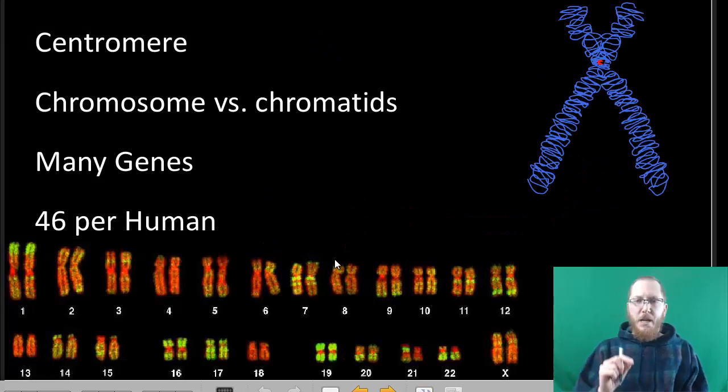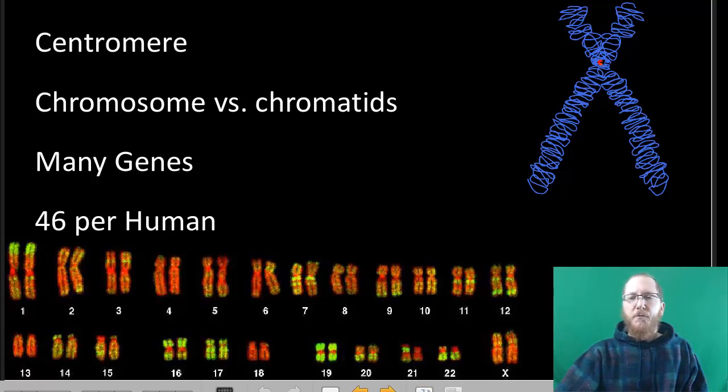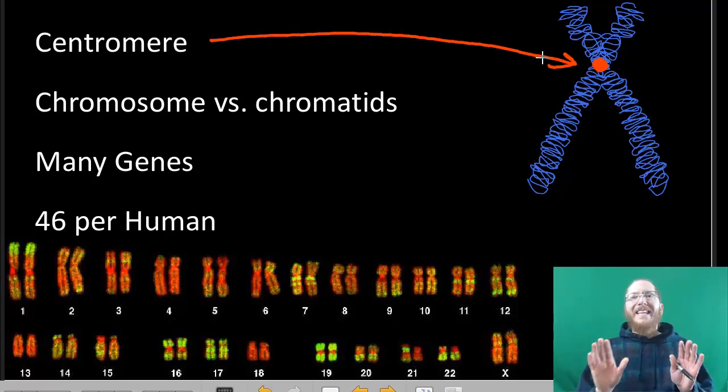Now, when you look at a chromosome, first of all, it's going to be defined by the centerpiece. There's going to be this kind of really dense middle region, this waist, as they sometimes call it. That's the centromere. Now, I want you guys to realize, any time you see a centromere, that will be called a chromosome. So this right here, as a whole, is going to be one chromosome.